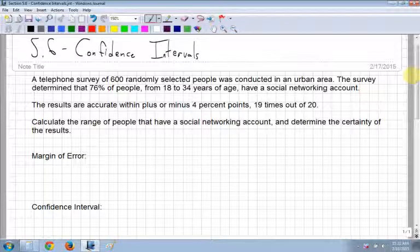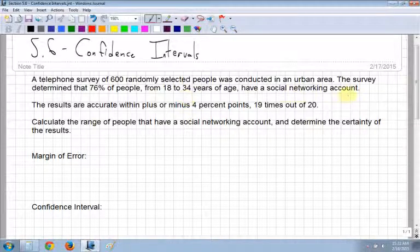A telephone survey of 600 randomly selected people. That's the number of people that are included in the survey. That's a pretty big sample size, and the survey determined that 76% of people from the ages of 18 to 34, this is just extra information really, have a social networking account.